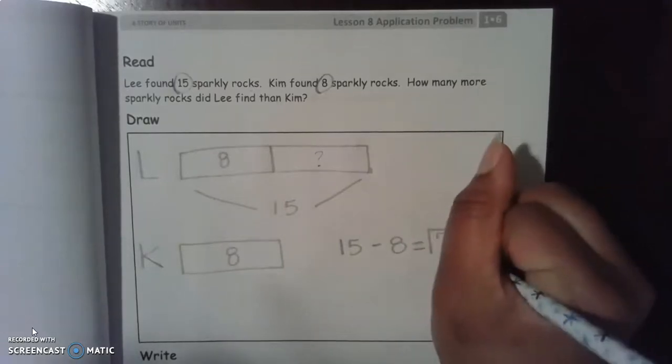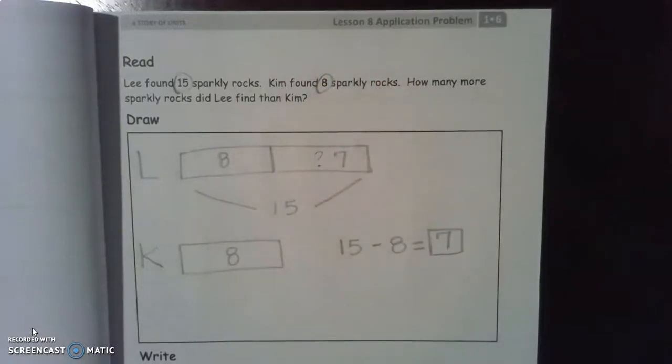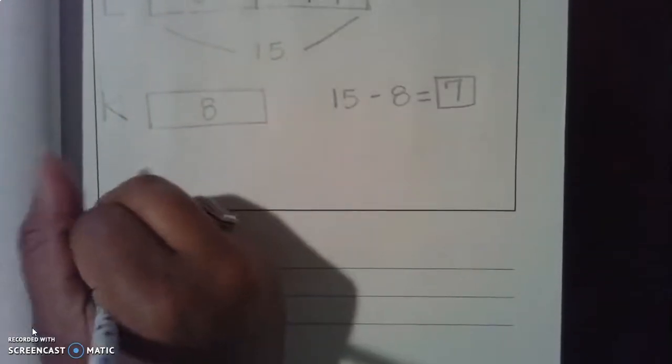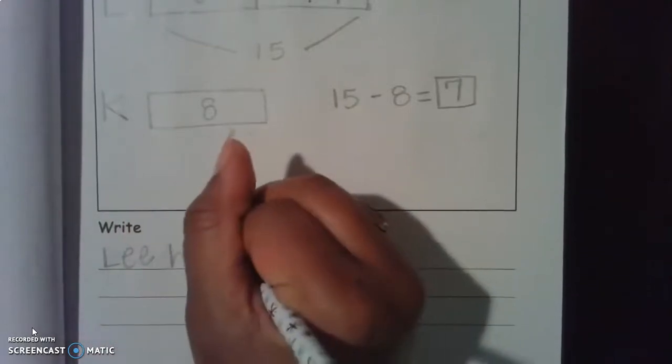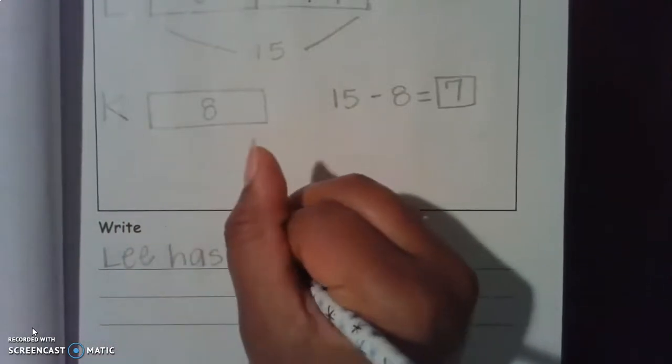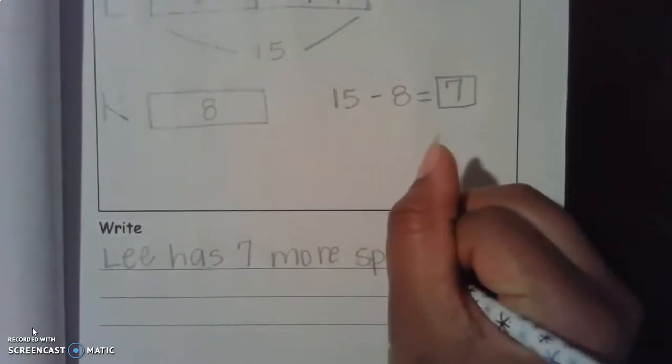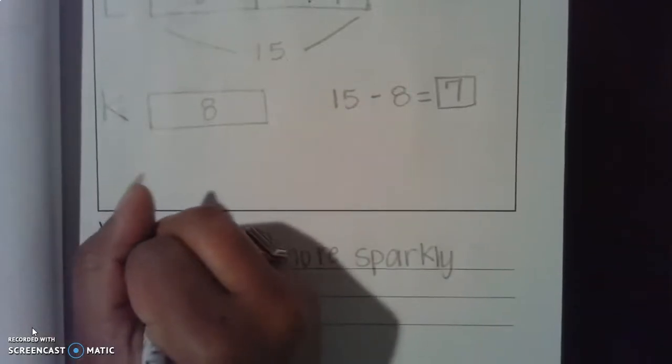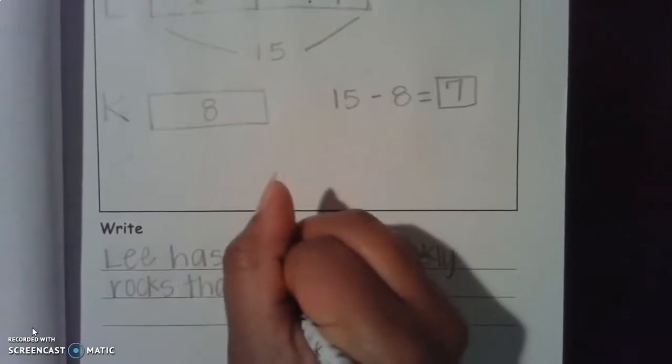So 7 is our mystery number. So now we can write our statement. And our statement would be Lee has 7 more sparkly rocks than Kim.